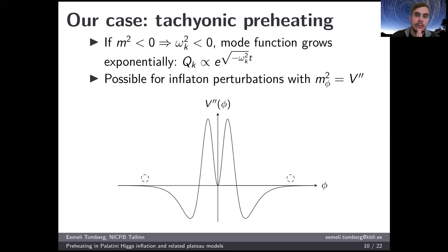However, it turns out that in our potentials, there is particle production which is even more efficient and based on a different mechanism. This is tachyonic preheating. Here we have ω_k² functions which become negative. If this is true, then these Fourier mode equations have exponentially growing solutions leading to very fast, very efficient particle production. This is possible for our inflaton in particular because the inflaton mass squared is given just by the second derivative of the potential. Here I have a picture of the second derivative of our potential in a typical case.